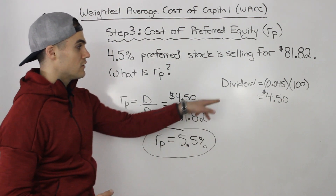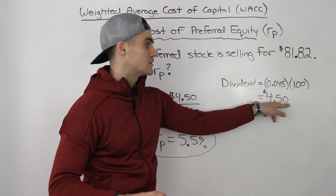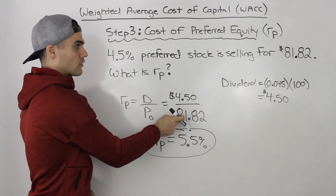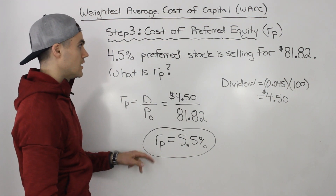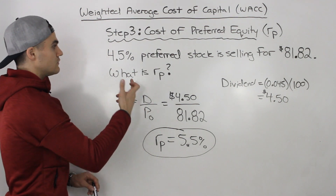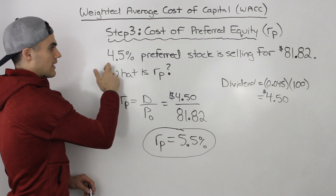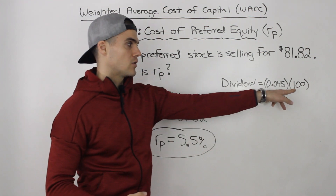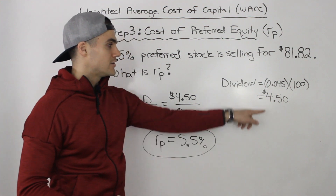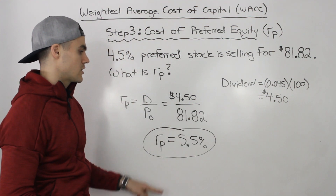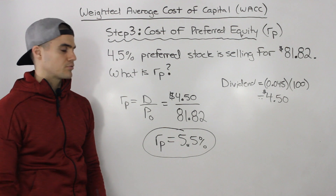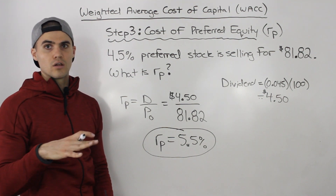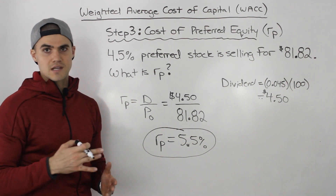So again, sometimes they'll give you the dividend dollar amount straight away — that's really easy, you just plug it in over the price and get the return on preferred. But sometimes they'll give you the dividends expressed as a percentage, and when expressed as a percentage, you multiply that percentage by the par value of $100 to get the dividend, then plug it into the equation. Either way, pretty simple — return on preferred is the easiest to calculate of all the different forms of capital.